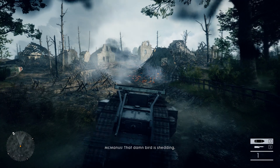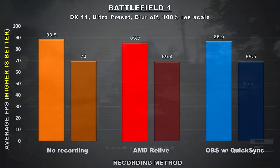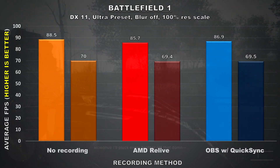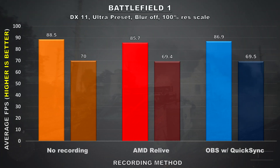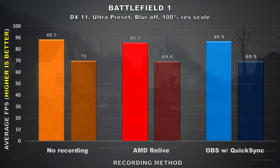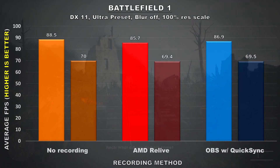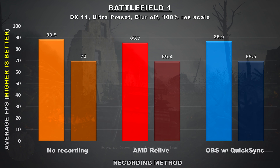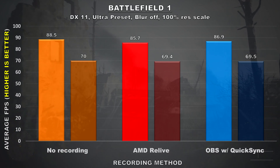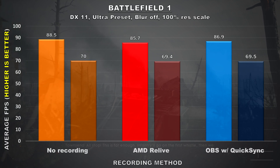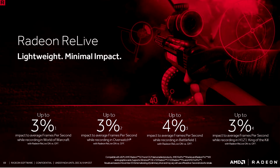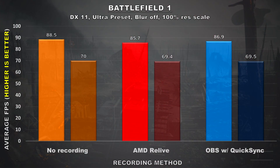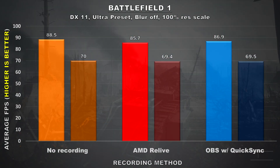The next results are from Battlefield 1. Here OBS just edges out Relive by 1 FPS, and the minimums were almost exactly the same — a different result from the first two games. The minimum frame rate difference between no recording and either recording method is only within 1 FPS, so you shouldn't notice any stuttering or steep drops. Also, when AMD unveiled Relive, one of their slides mentioned that the performance impact for Battlefield 1 is up to 4%. Looking at my results, the difference is only about 3%, and the minimums are within 1%, which lines up with what they stated.